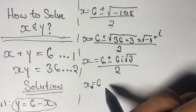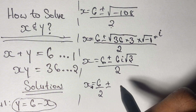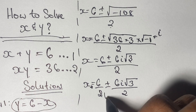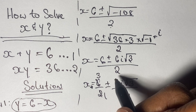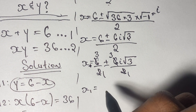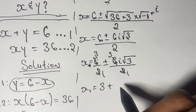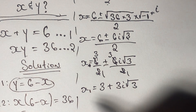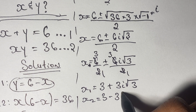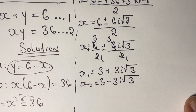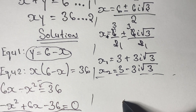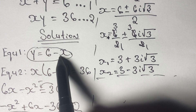Now we have x equal to 6 plus or minus — the square root of 36 is 6 — so we have 6 times i times the square root of 3, all over 2. We can simplify as 6 over 2 plus or minus 6i times the square root of 3 over 2. So for our first solution x is equal to 3 plus 3i√3, and for our second solution x is equal to 3 minus 3i√3.